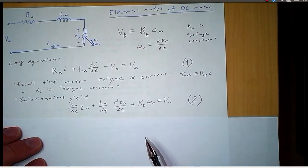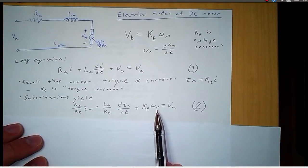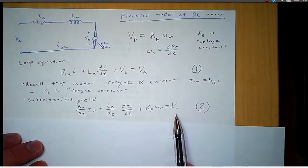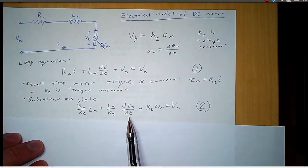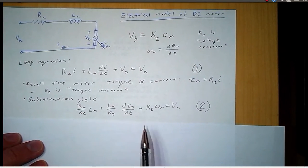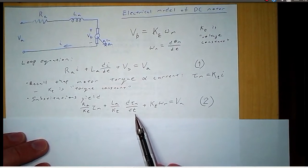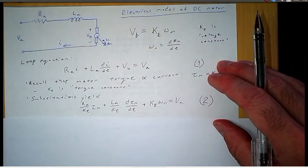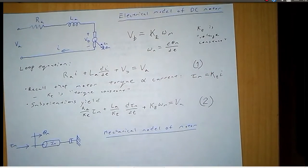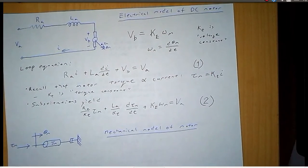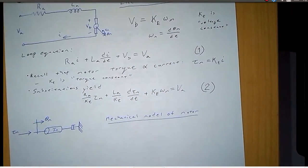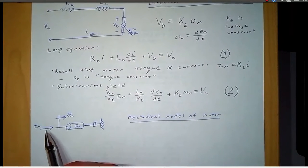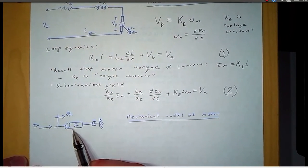We now have the derivative of the position related to the armature voltage and the torque, and this is where the mechanical model comes in. We want to relate the torque to the position. Here is the motor — the armature — and it has some inertia, a moment of inertia, represented by the mechanical impedance JM.